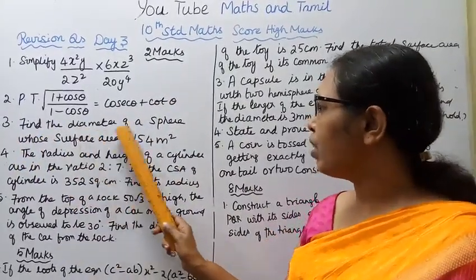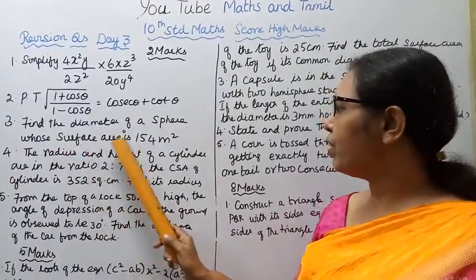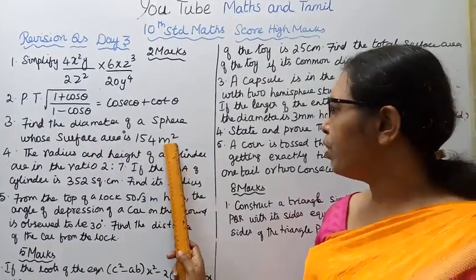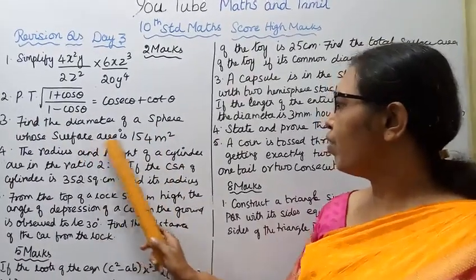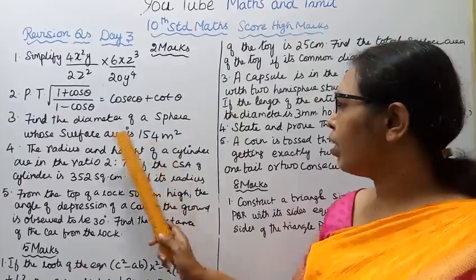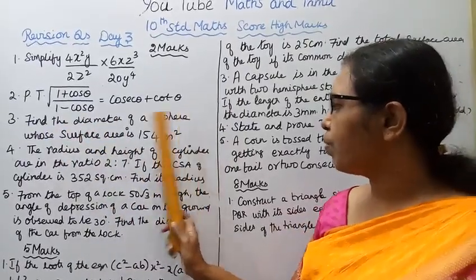find the diameter of a sphere whose surface area is 154 square meters. Surface area is 154 m². You have to find the diameter of the sphere.